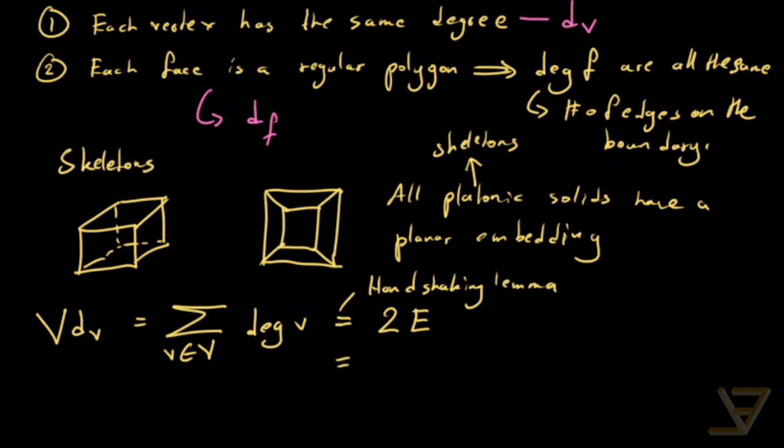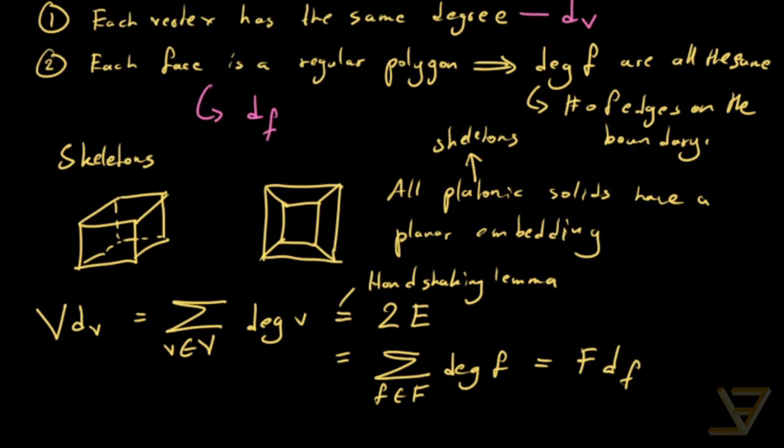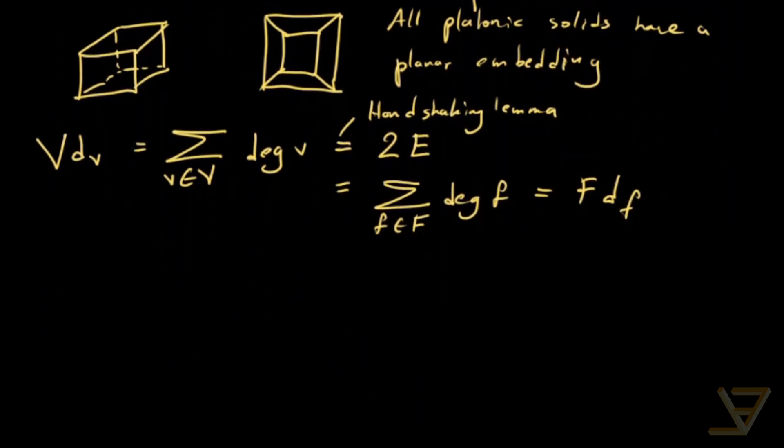And by the handshaking lemma for faces, which I also treated in a different video, is equal to the sum of the degrees of the faces over all faces in big F. And that's just equal to capital F times the degree of F, the universal degree of the faces. So this tells us that VDV is equal to 2E is equal to FDF.